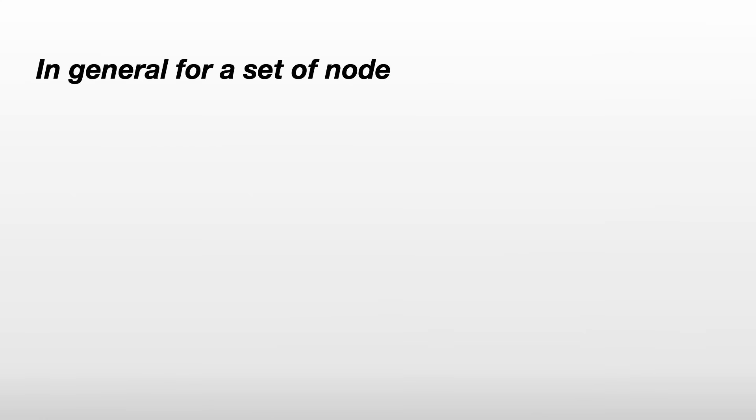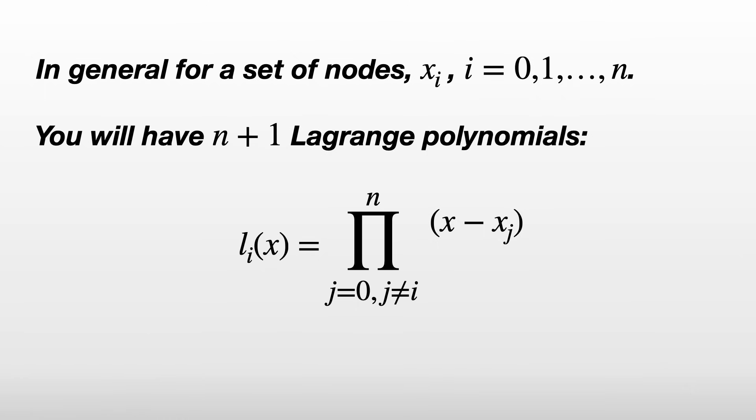So in general, for a set of nodes x_i for i equals 0 to n, the i-th Lagrange polynomial is the product from j equals 0 to n, excluding j equals i, of (x - x_j) over (x_i - x_j).